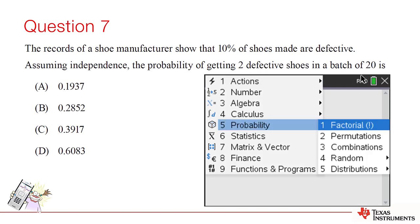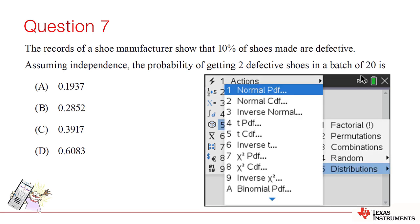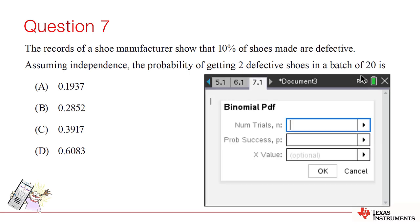So, using the probability menu, we can select Distributions, followed by Binomial PDF. Here, we're prompted for the number of trials, the probability of success, and the required number of successes.